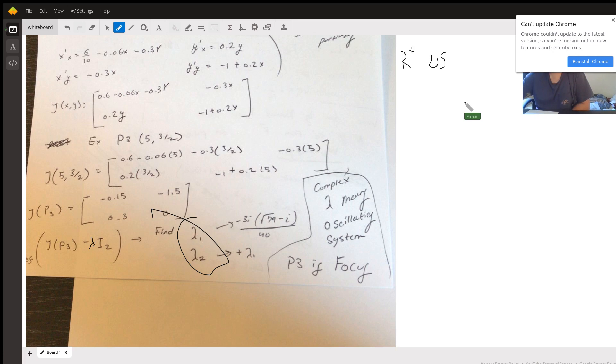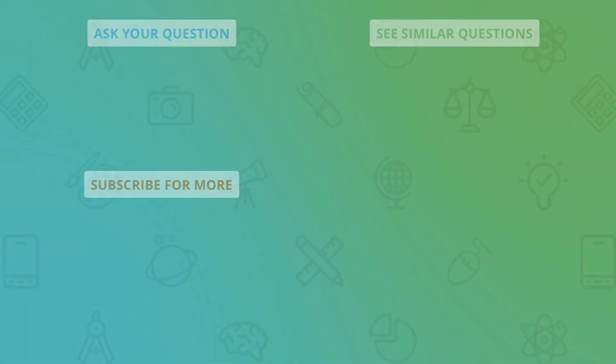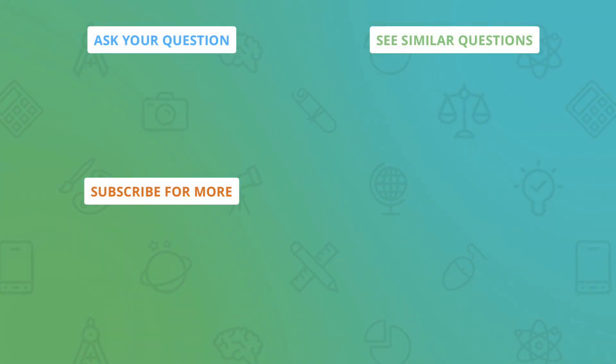When you have mixed between real and positive and negative eigenvalues, it's unstable.